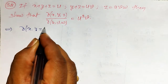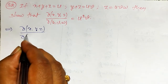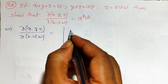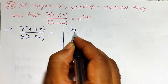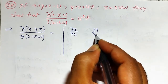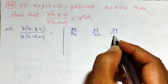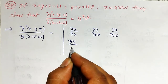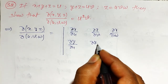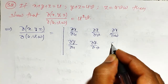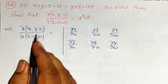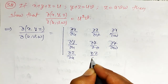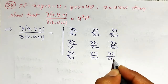∂(x, y, z) / ∂(u, v, w) is defined to be a determinant: the first row is ∂x/∂u, ∂x/∂v, ∂x/∂w; the second row is ∂y/∂u, ∂y/∂v, ∂y/∂w; and the third row is ∂z/∂u, ∂z/∂v, ∂z/∂w.